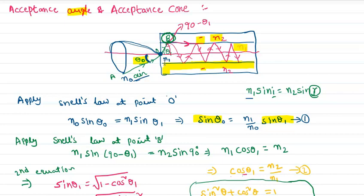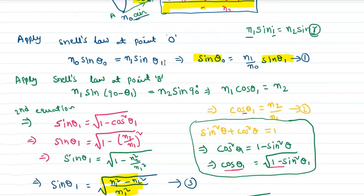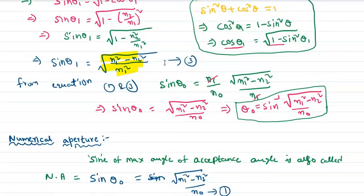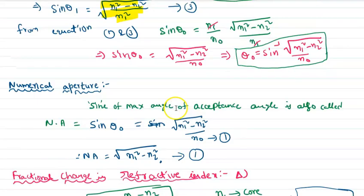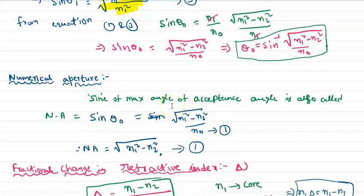If we rotate the ray around the fiber axis, we obtain an acceptance cone. The relation between the acceptance angle and the refractive indices is: theta naught equals sine inverse of the square root of n1 squared minus n2 squared, divided by n naught. The numerical aperture represents the light collecting capacity of an optical fiber.